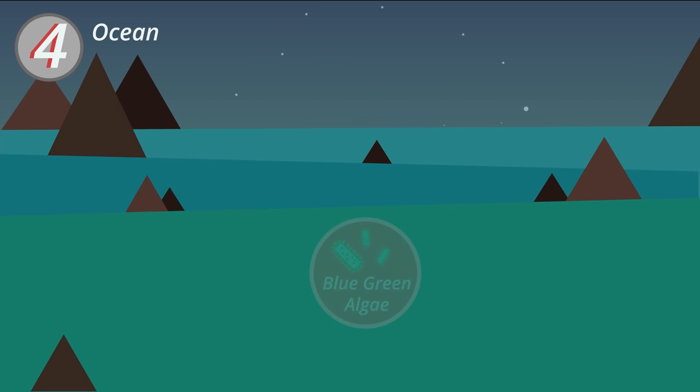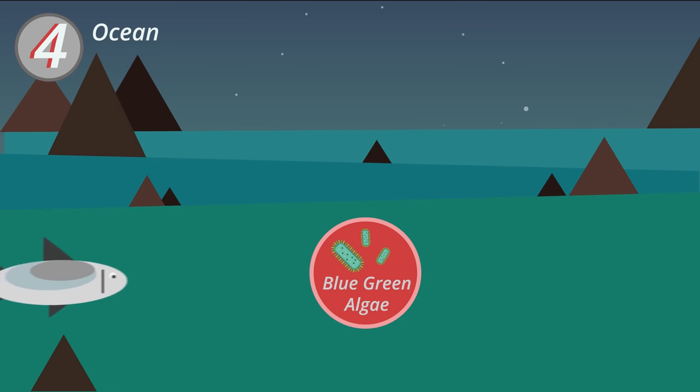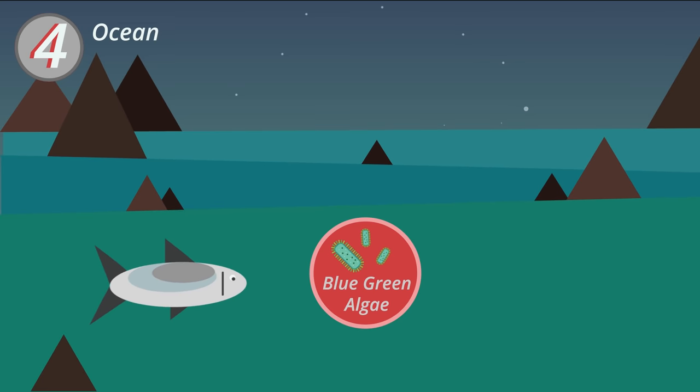And finally, in the oceans many species of blue green algae, also called cyanobacteria, can fix nitrogen. This then provides sources of nitrogen to aquatic animals, and the nitrogen goes around a similar cycle to what happens on land.